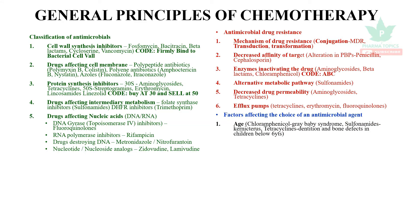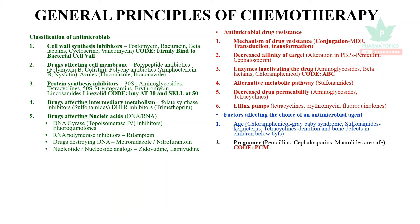Age is one factor: some drugs cannot be given to children. For example, chloramphenicol causes gray baby syndrome in neonates; sulfonamides cause kernicterus or jaundice in neonates; tetracyclines cause dentition or bone defects in children below six years. For pregnancy, very few drugs are preferable — penicillins, cephalosporins, and macrolides; others are not safe. Remember this with the code PCM.